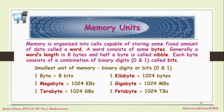Memory is organized into different cells or partitions, which are capable of storing some fixed amount of data called a word. The amount of bytes in a word is called word length. A word consists of some bytes, and half a byte is called a nibble. Each byte consists of a combination of binary digits called bits — 0 and 1. The smallest unit of memory is a bit, a group of 8 bits is called a byte, 1024 kilobytes is called a megabyte, 1024 megabytes is called a gigabyte, and we also have higher memory units such as terabyte, petabyte, etc.